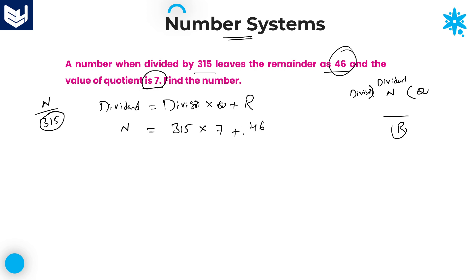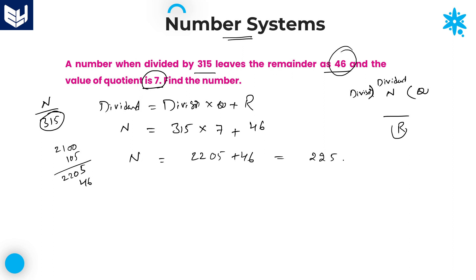Find the number. N is equal to 315 into 7 plus 46. Here, 300 into 7 is 2100, and 15 into 7 is 105, so the product is 2205. Adding the remainder: 2205 plus 46 equals 2251. Therefore, that number is 2251. That is the required answer for this question.